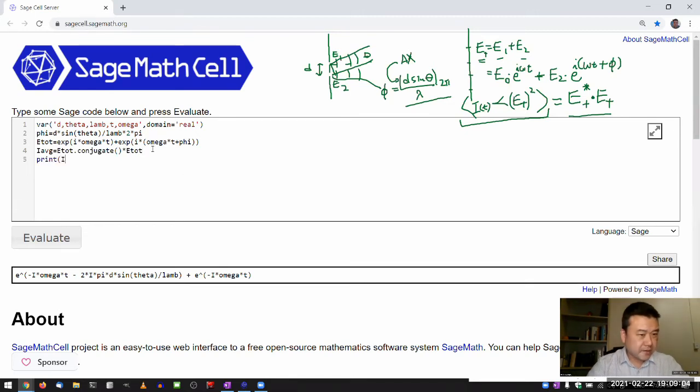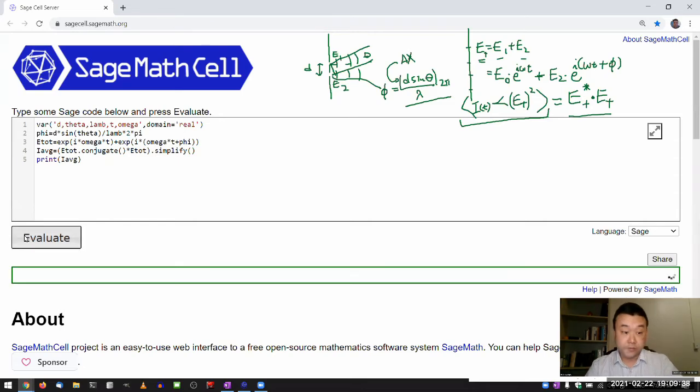And I defined these to be real variables so that this expression looks simple. The program doesn't try to do conjugate of omega, which is equal to omega when omega is real. So I average is going to be complex conjugate times the E total. And when you just print this, this is going to look a little bit complicated because it's complicated algebra. Now, one of the nice things about SageMath is that it's a computer algebra system, it can do some of the symbolic algebra.